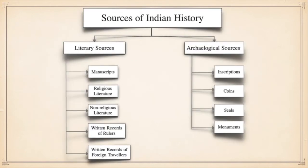Sources of Indian history. The evidences that relate to the origin of the earliest civilizations, their cultures and their beliefs can be obtained from the sources available about India's history. Basically, there are two types of sources: literary sources and archaeological sources.